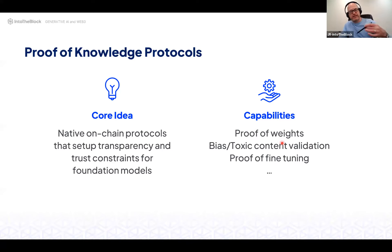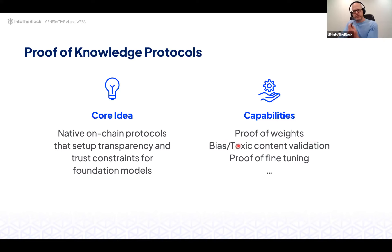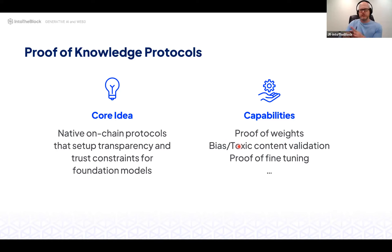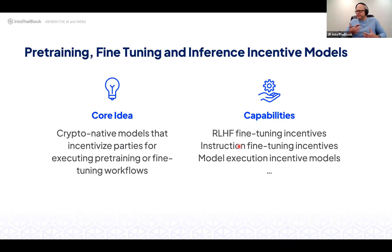For example, when LLaMA's weights were leaked, what if you could have a zero-knowledge proof of those weights? You could prove these are the weights of this model without revealing exactly how it works — or validate that the model was fine-tuned on a specific dataset, like a set of smart contracts, so it understands Solidity well. This is particularly valuable in mission-critical, self-regulated industries.